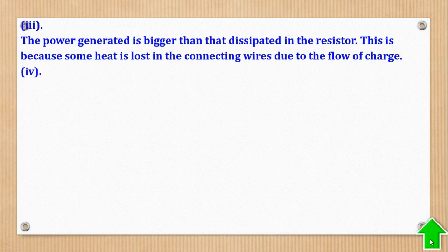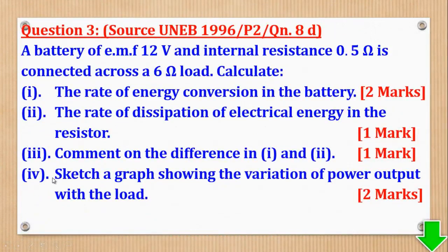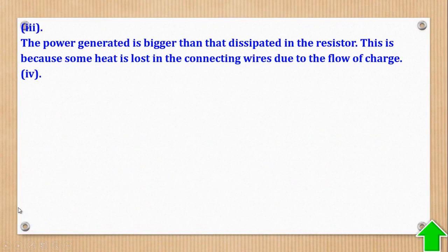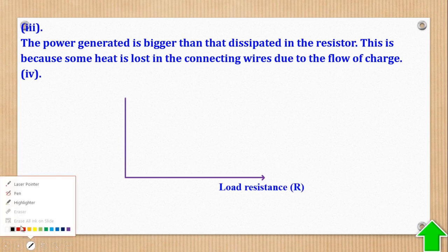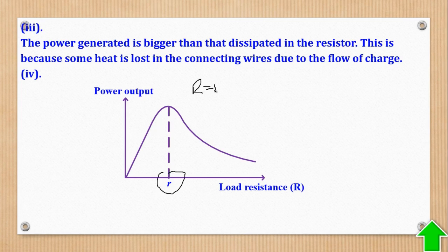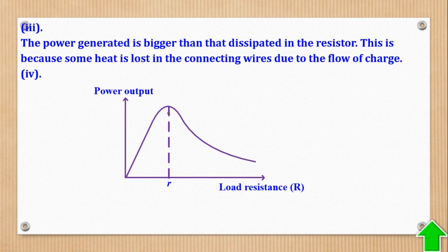For part (iv), sketch a graph showing the variation of power output with the load. Maximum power occurs when R equals small r — that is, when the external resistance equals the internal resistance. At that point the curve is at its peak. That is the shape of the graph, but you can read more in the book.